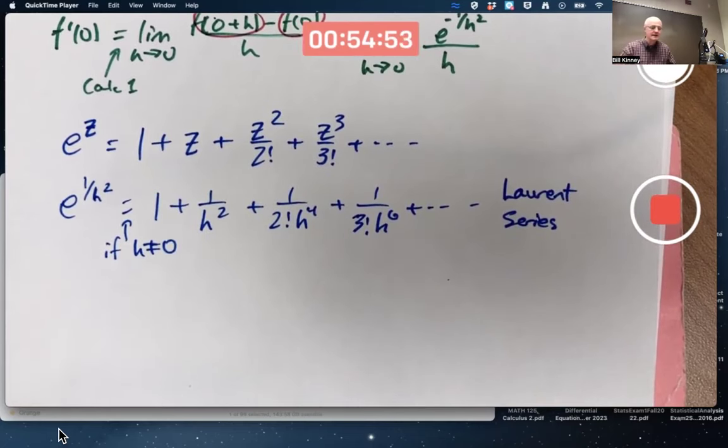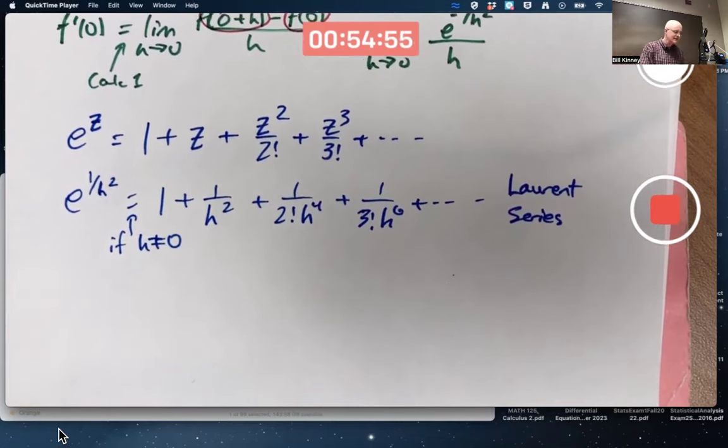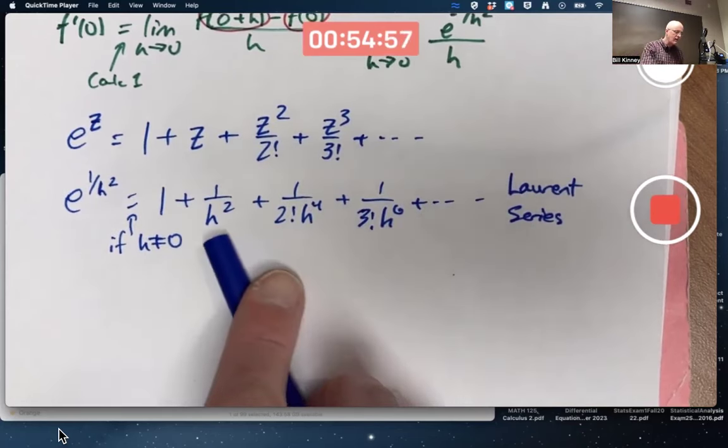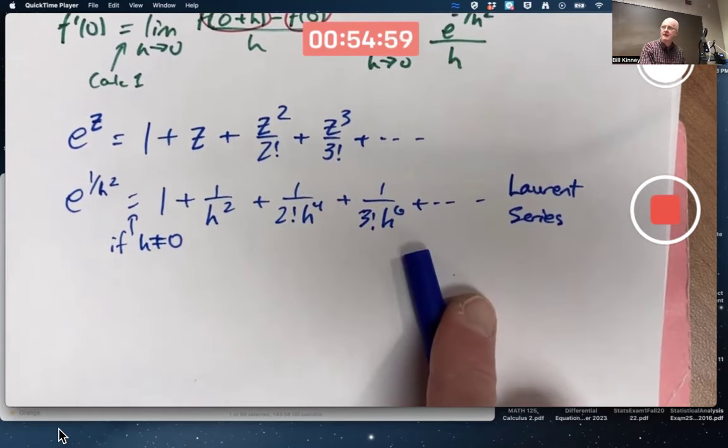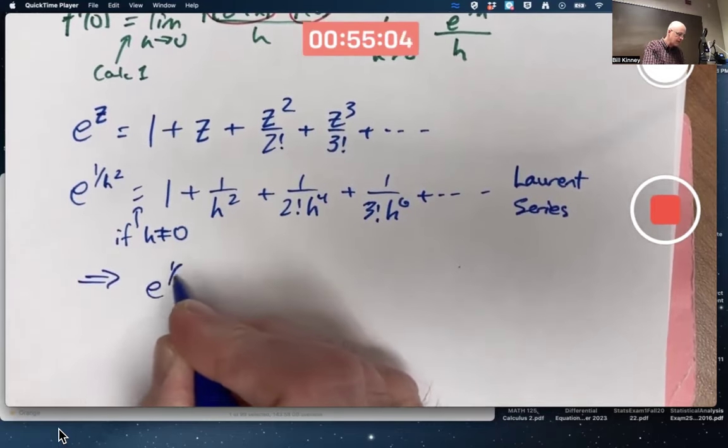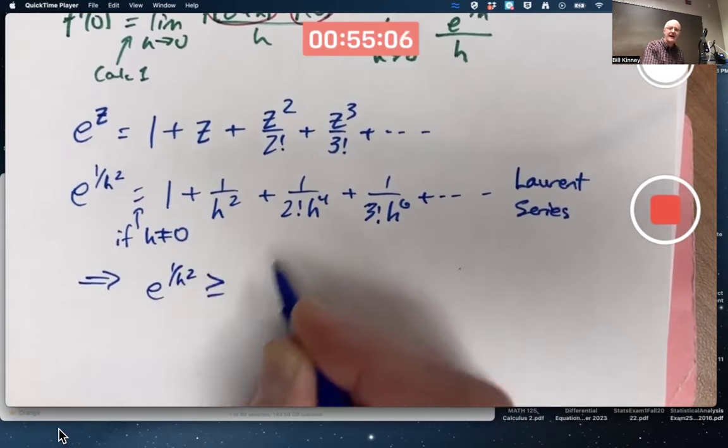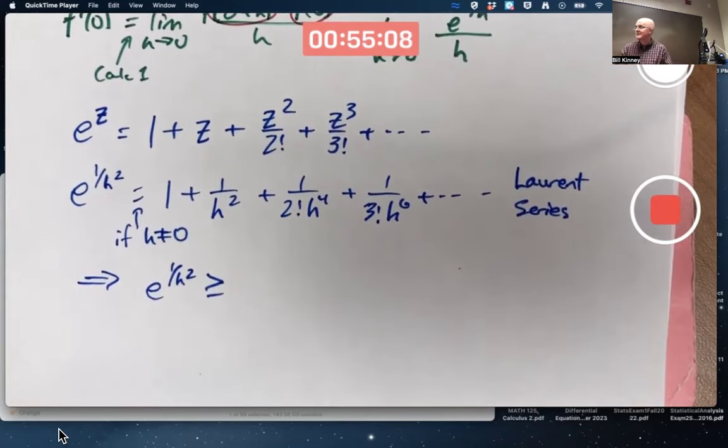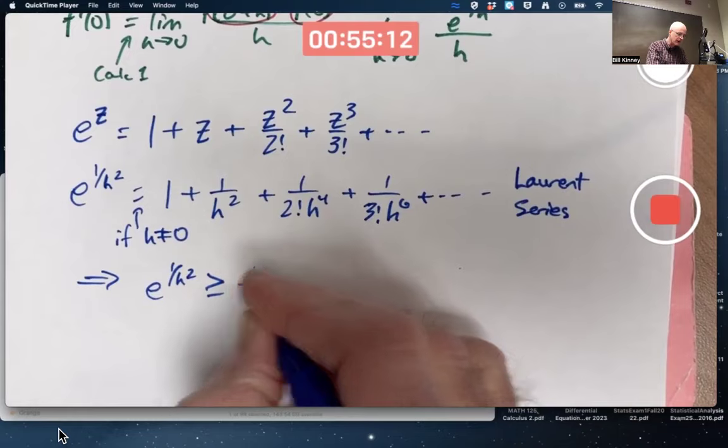My purpose in showing you this is twofold: one, to show you hey you can do this, and secondly, to say if h is not zero, all these quantities here are positive. And therefore, this implies that e to the one over h squared is actually greater than or equal to any one of these terms by itself. And for my purposes, I'm going to pick the second term: one over h squared.